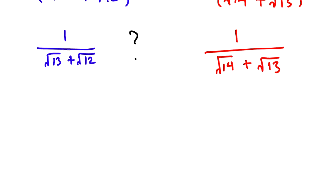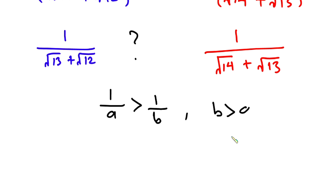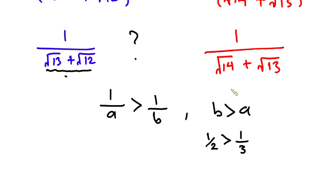From here we can easily tell. Consider the rule: 1 over a is greater than 1 over b, provided b is greater than a. For example, one half is greater than one third, where a is 2 and b is 3. Likewise, comparing our two expressions, the denominator of the second — square root of 14 plus square root of 13 — is greater than that of the first.